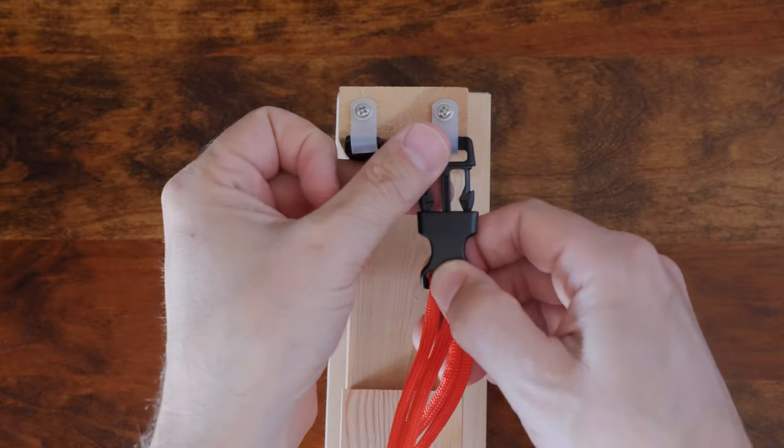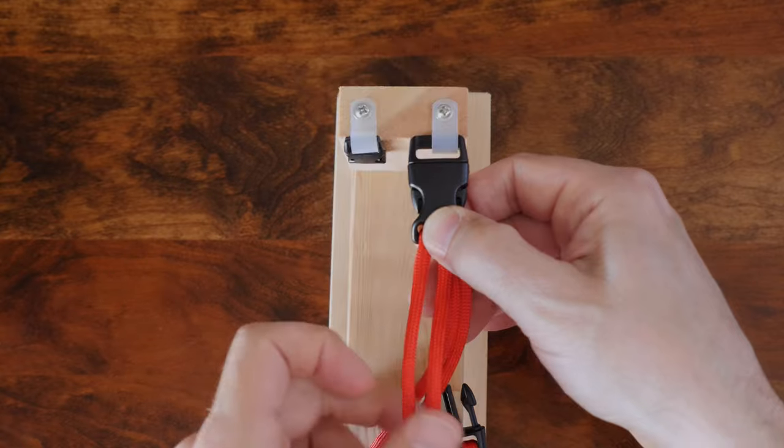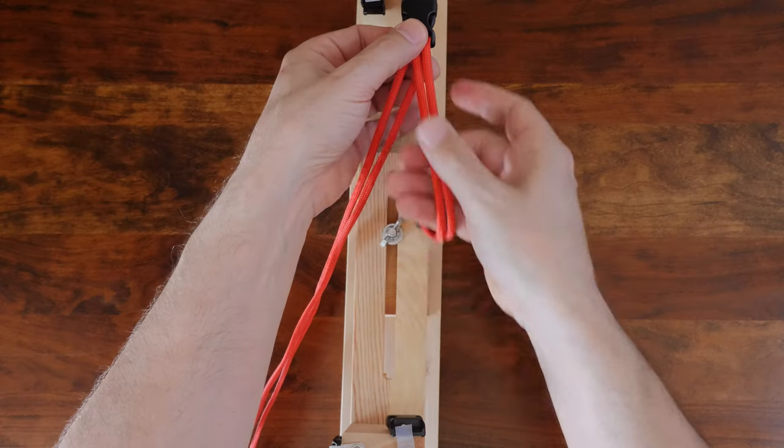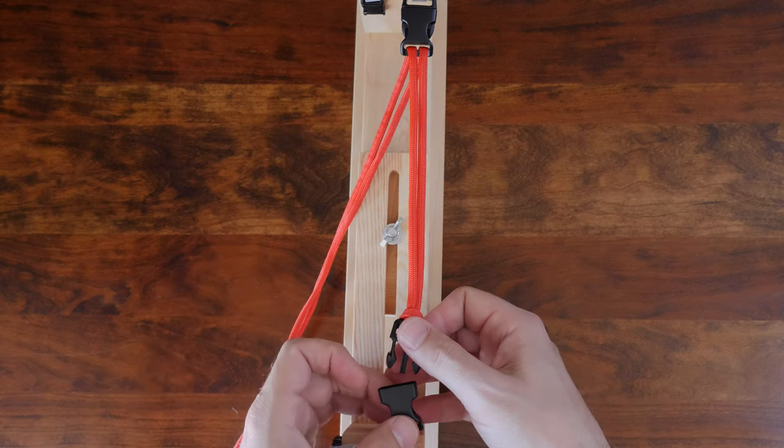I'm going to be using a paracord bracelet jig to tie the fishtail weave. It'll help keep my hands out of the way of the camera so you can see what I'm doing. The jig isn't necessary. This is an easy paracord bracelet pattern that you can do freehand.